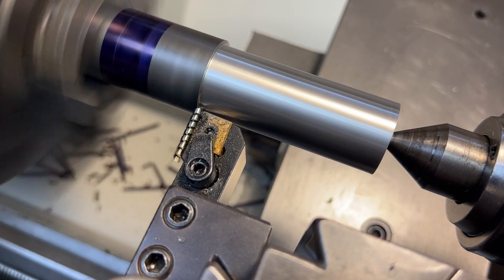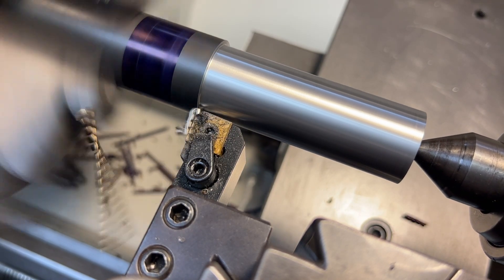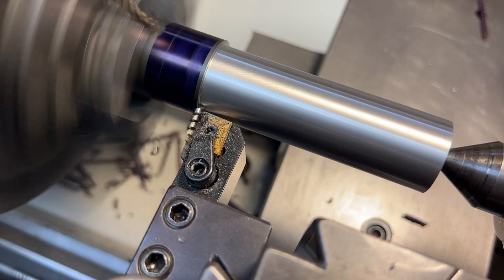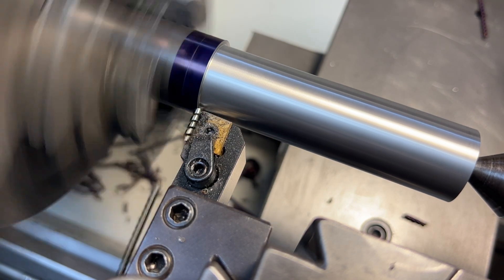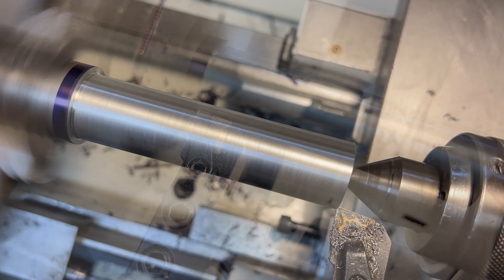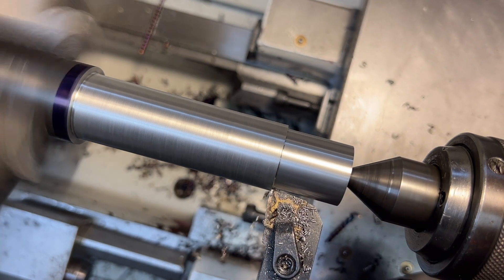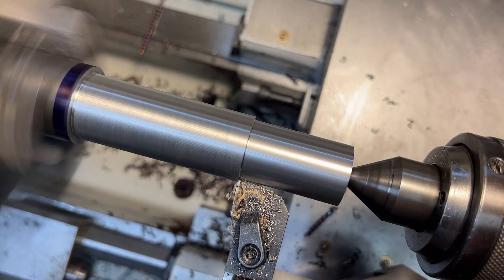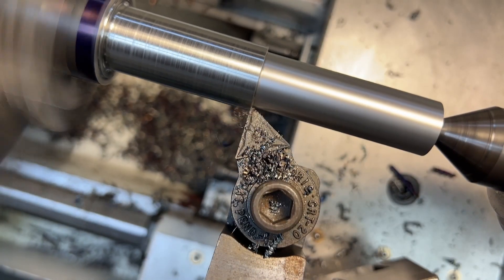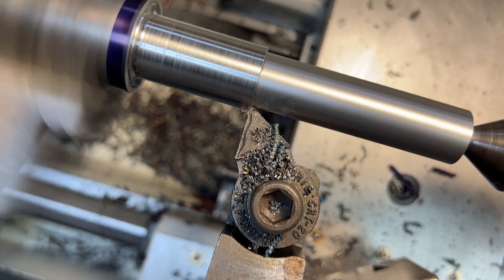So I should mention that the section of this shaft that we're turning right behind this shoulder that we're creating is actually a bearing race. So there is a bearing that needs to fit on that section and butt right up against that shoulder with about a half of a thousandth of a running fit.